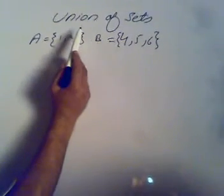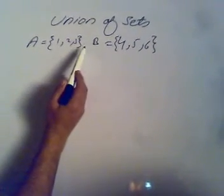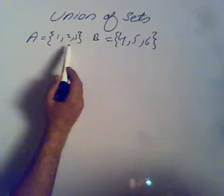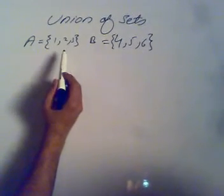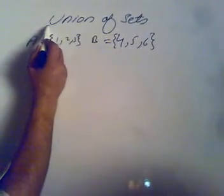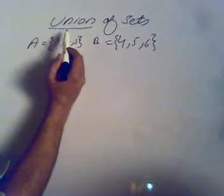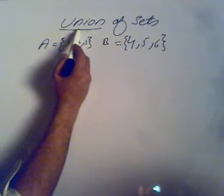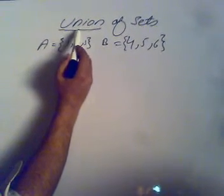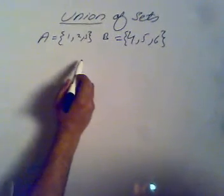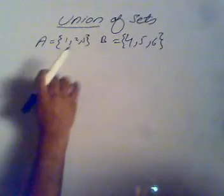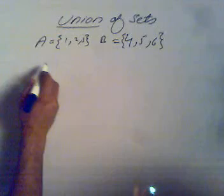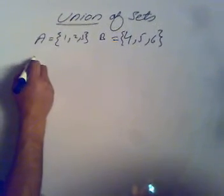As-salamu alaykum. In this lecture we will discuss the union of sets. We have taken two sets as an example and we will find the union of these two sets. First of all we need to understand the term union. The meaning of union is to unite and to combine. The same concept applies in sets — we will combine two sets and solve them with the following process.